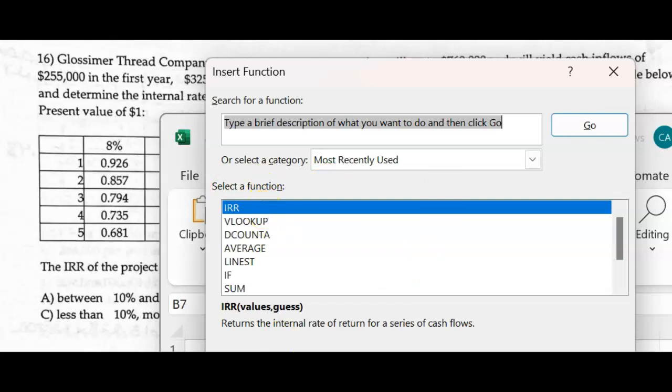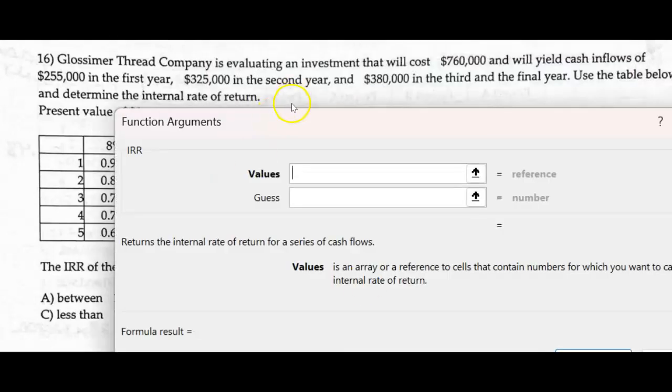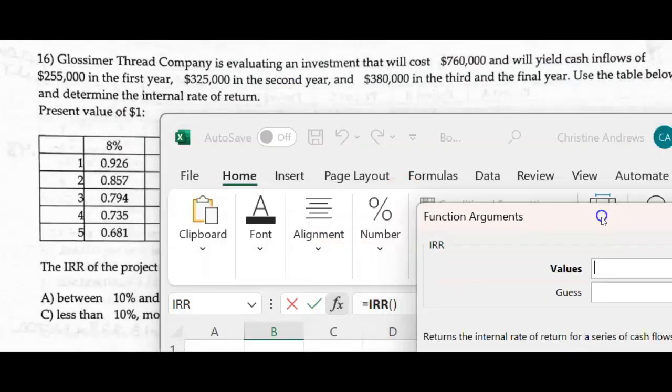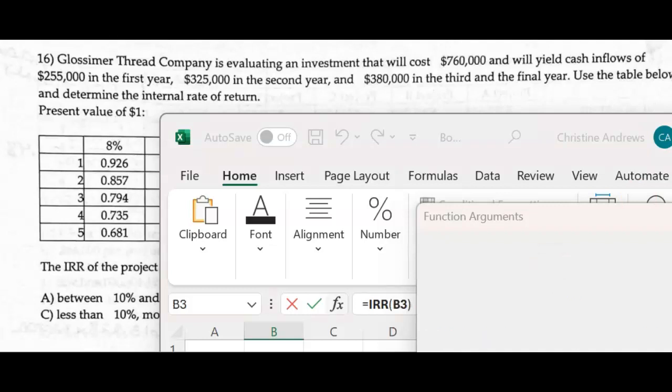So this is what we want, and I'm going to hit OK. The values are just that range. These are the values, okay, that's our range.